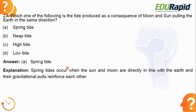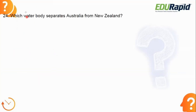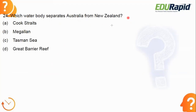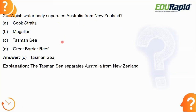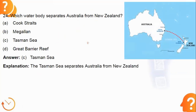Next: which water body separates Australia from New Zealand? The answer is option C — the Tasman Sea. In the picture, New Zealand is on one side and Australia is on the other, with the Tasman Sea separating them. This is a factual point you just need to remember.